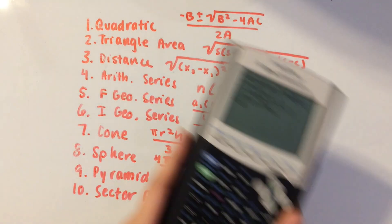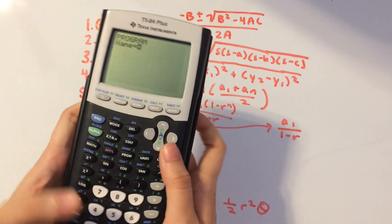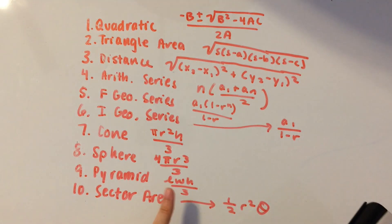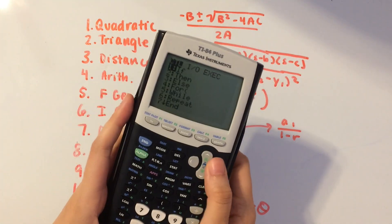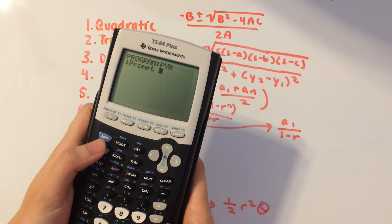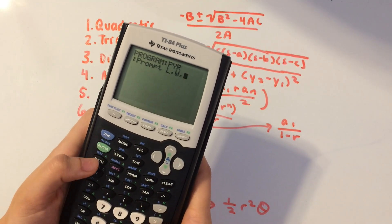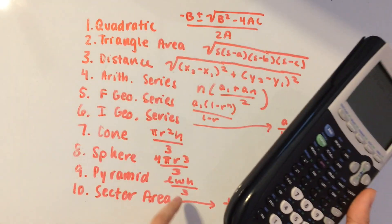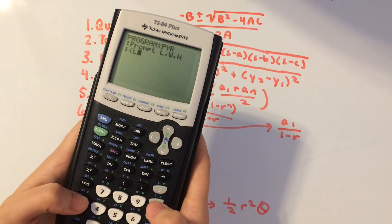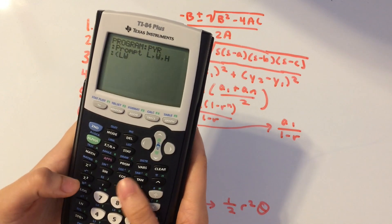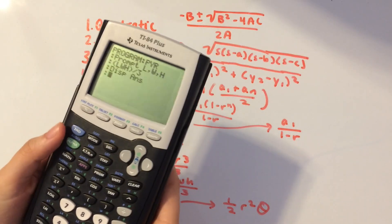Moving on to pyramid. Create a new program and call it PYR. We need to prompt for length, width, and height — so prompt for L, W, H. The formula is length times width times height, divided by 3. Display the answer and we're done — that's a relatively easy one.